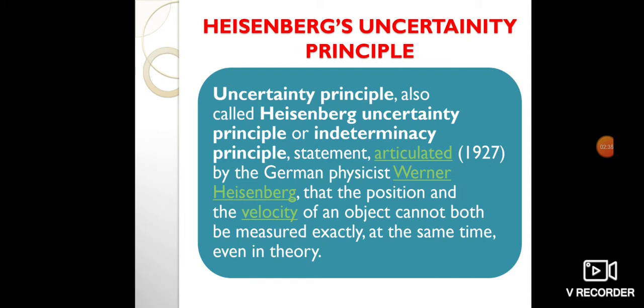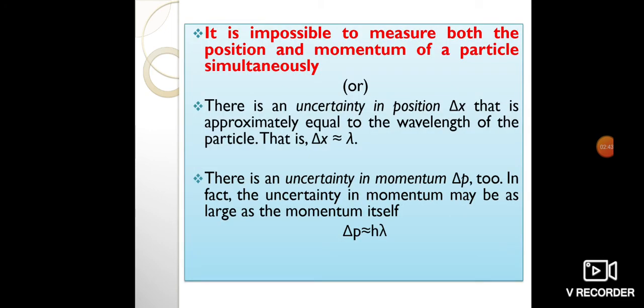There is an uncertainty in position that is approximately equal to the wavelength of the particle. As discussed, a wave is not located at one point in space. If the electron's position is measured repeatedly, the spread in locations will be observed, implying an uncertainty in position.